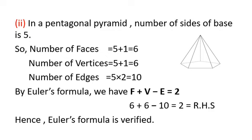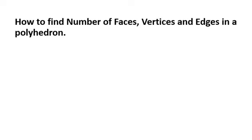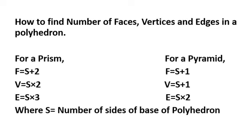For reference, the table for prisms and pyramids: for a prism — F = s + 2, V = s × 2, E = s × 3; for a pyramid — F = s + 1, V = s + 1, E = s × 2, where s is the number of sides of the base. This table makes it easy to find faces, vertices, and edges.